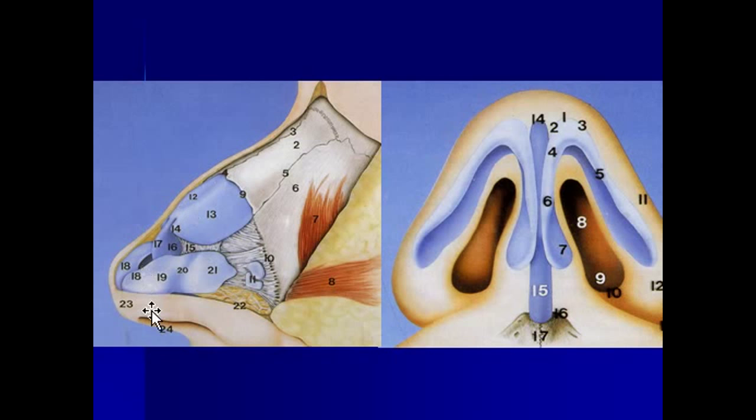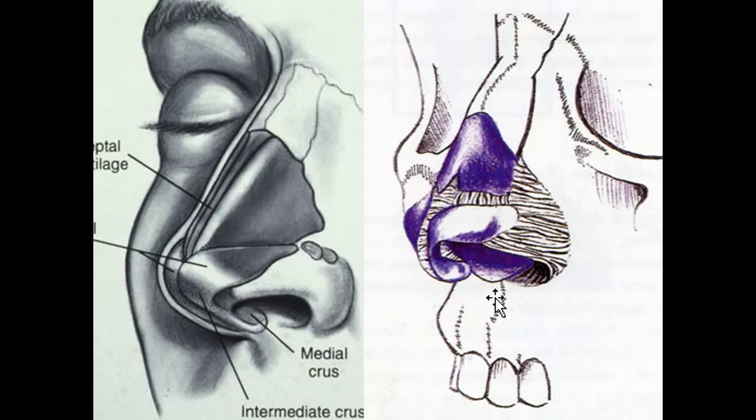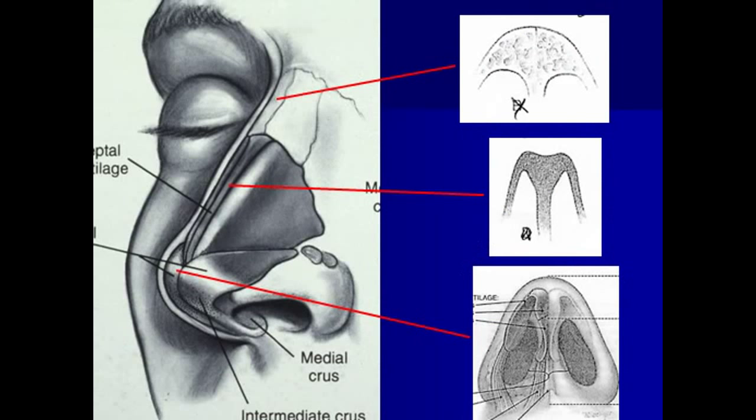You can see that the nasal anatomy is fairly intricate, and this picture again shows that they're held together by all of these fibrous ligamentous attachments.